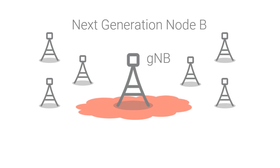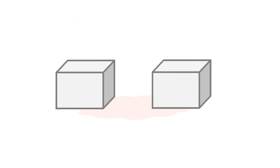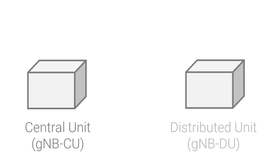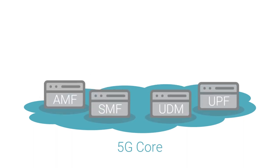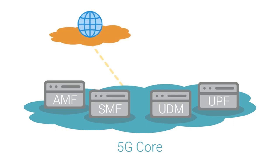The radio network consists of gNBs. A gNB may be decomposed into a central unit and a distributed unit. The core network in 5G is highly modularized and has more than a dozen different network functions including AMF, SMF, UDM, and UPF. The core network provides access to data networks like the internet and service networks like IMS.